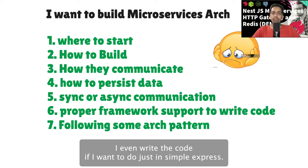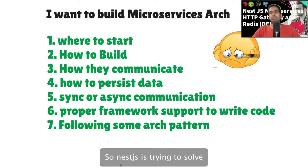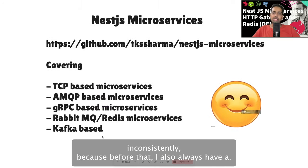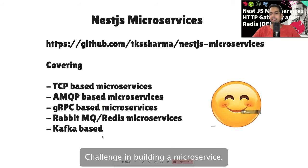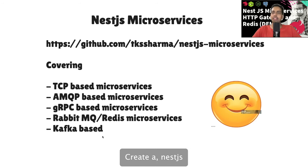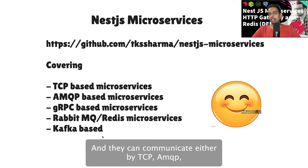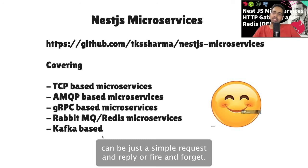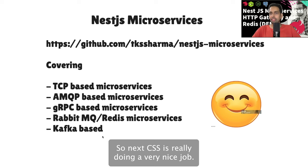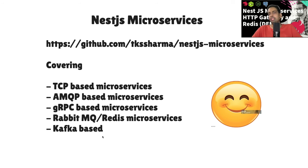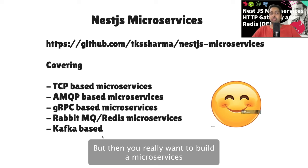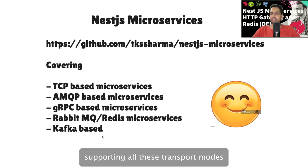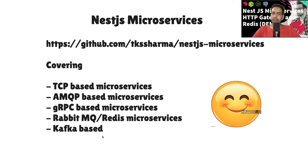NestJS is trying to solve all those different aspects in a consistent way, because building a single microservice is fine but getting all microservices to follow the same pattern is a challenge. You can create a NestJS proxy server and proxy client, and they can communicate either by TCP, AMQP, gRPC, or through RabbitMQ. The communication can be a simple request-reply or fire-and-forget. NestJS supports TCP, AMQP, gRPC, RabbitMQ, and Kafka as transport modes.